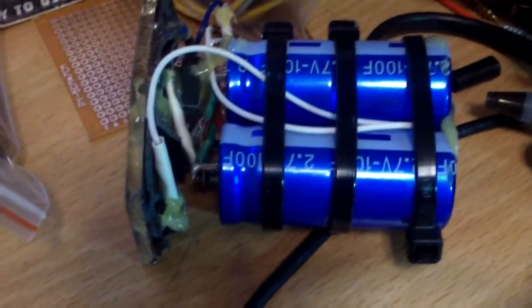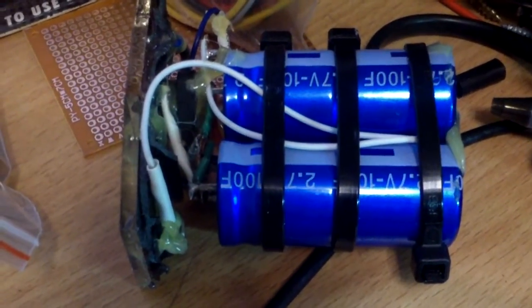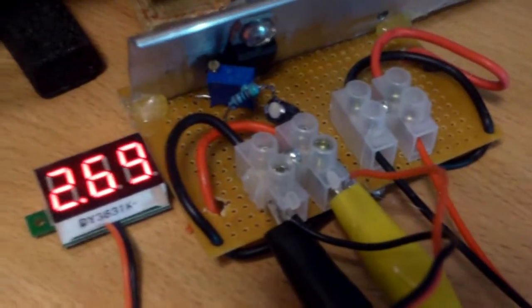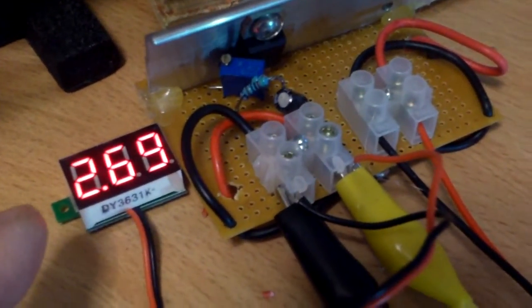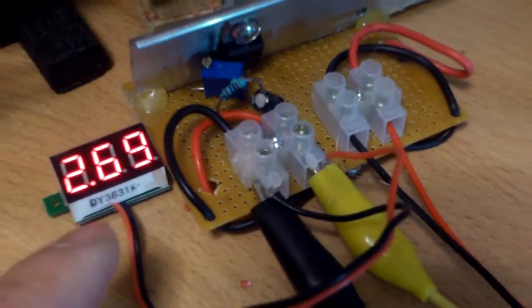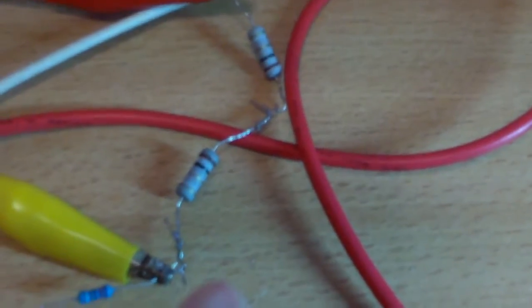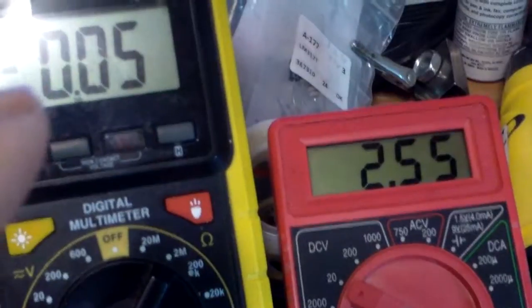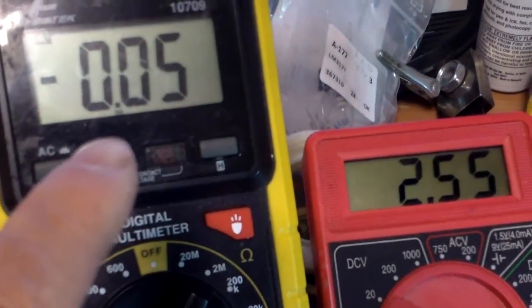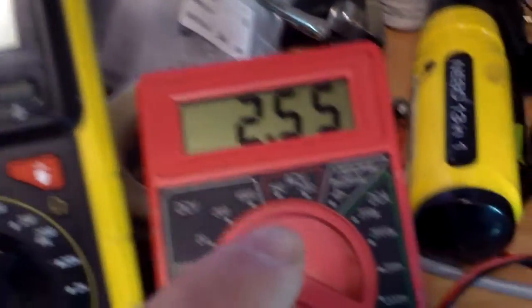They are 2.7V and 100F and they are in parallel. I'm gonna charge them pretty close to 2.7V. I set the charging voltage to 2.69 and I'm using a couple of resistors to limit the current. Now it's pretty much coming towards the end of the charge, passing through about 40 to 50 milliamps and the voltage is at about 2.55.